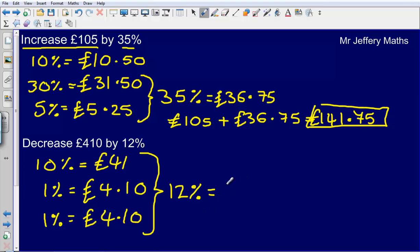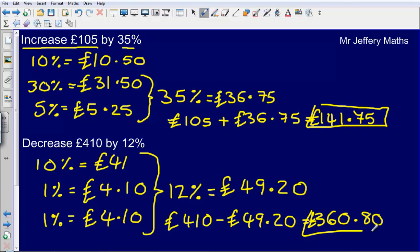Now again, I'm not finished here. I've only worked out what 12% is. I need to decrease £410 by 12%, so let's do that now. £410 minus £49.20 gives me an answer of £360.80. So the final answer here would be £360.80.